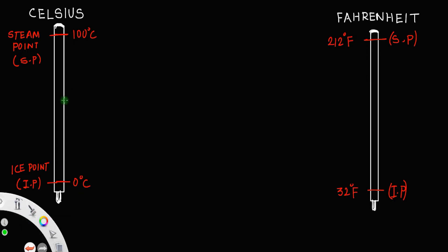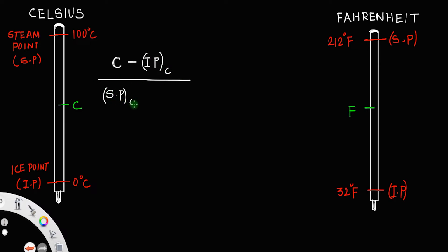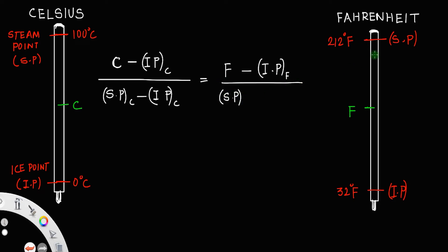Suppose we have a temperature C degrees Celsius equal to F degrees Fahrenheit. Then how will you find the relationship between C and F? For that, we use the relation: C minus the ice point of the Celsius scale, divided by the steam point minus the ice point of the Celsius scale, equals F minus the ice point of Fahrenheit divided by the steam point of Fahrenheit minus the ice point of Fahrenheit.